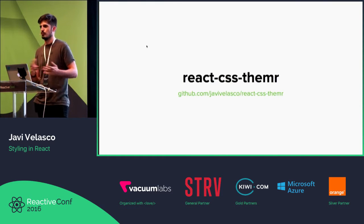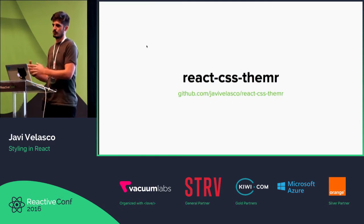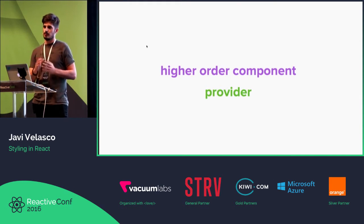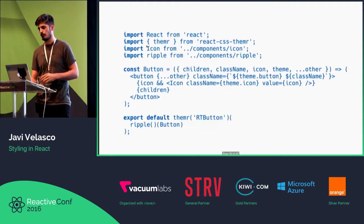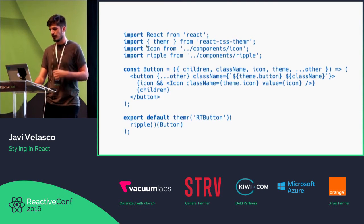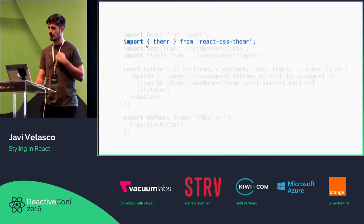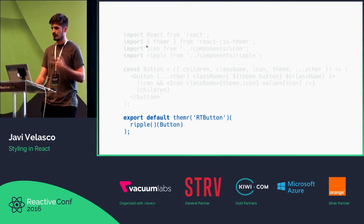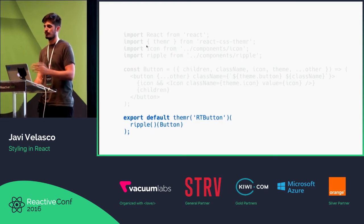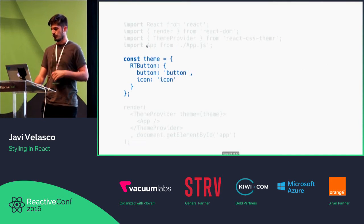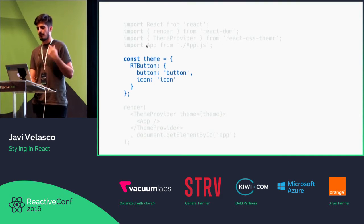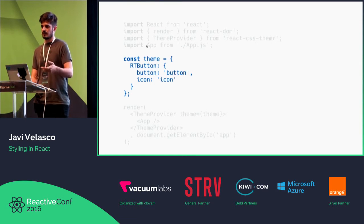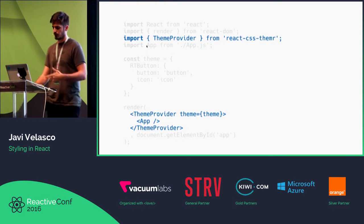To help you with that — because it's kind of tedious to be injecting into every single component this theme — I wrote a small module called React CSS Theamer. It's implemented using the common pattern of a higher-order component and a provider component. Using it looks like this: you import this higher-order component from React CSS Theamer and then use it, assigning a unique identifier for your component in the scope of your whole application. Then, up in the root of your application, you would define a theme like this, using that unique identifier and assigning the CSS module, so every component can grab its own from the context.